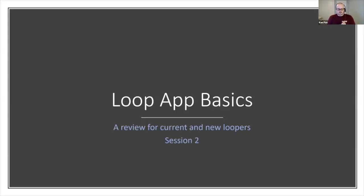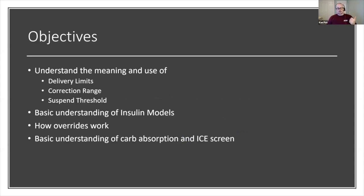This is part two. We'll cover what Joanne showed last time, and if we have time we'll get into carbs — otherwise we'll save that for the next session. This is targeted toward people who are already looping. If you haven't started yet, this will probably be over your head. We'll go through delivery limits, correction range, suspend threshold, and those kinds of settings.